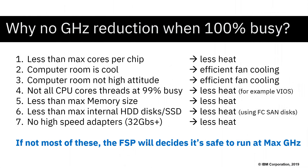I can't see the gigahertz reduction when it's 100% busy because I haven't got the maximum number of cores, my computer room is nice and cool, it's not at high altitude — which generates more problems because the air is thinner and the fans have to go even faster. Not all my threads are busy; I've got VO servers where I can thrash my application LPARs without necessarily thrashing the VO servers. I haven't got maximum memory size, I only have four disks at the front — brown spinning disks can get quite hot and reduce airflow, while SSDs run cold. I have no fancy high-speed adapters at the back. In practice, very few people would see the gigahertz reduction; only the benchmark team. But at least if it does happen, you'll know that's perfectly normal, because you're getting the temperature up in your machine.